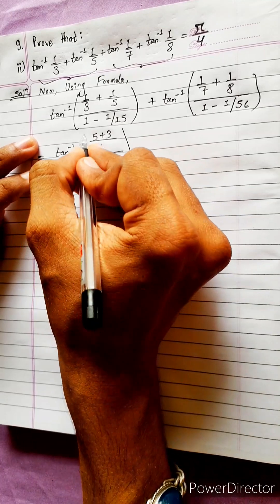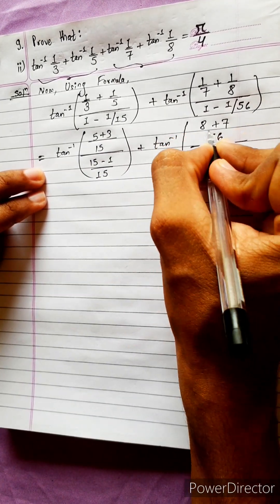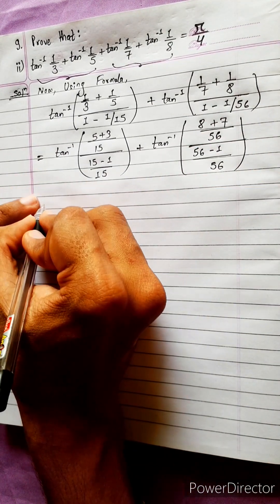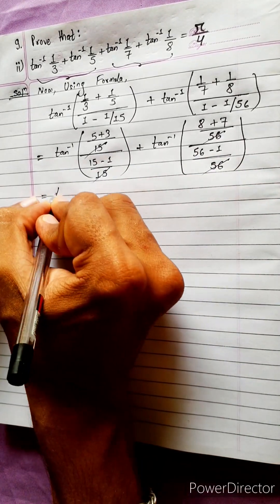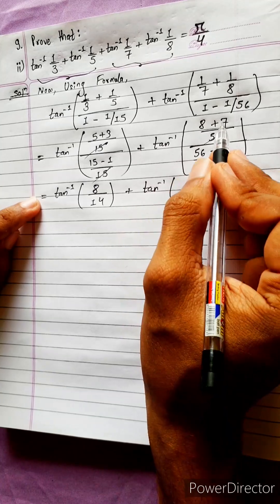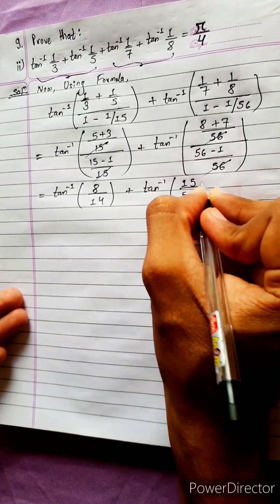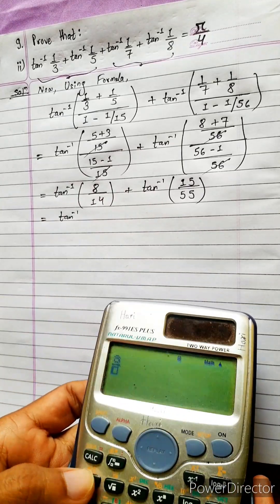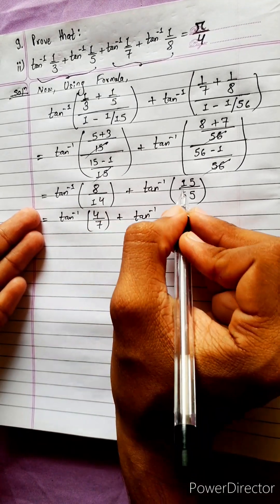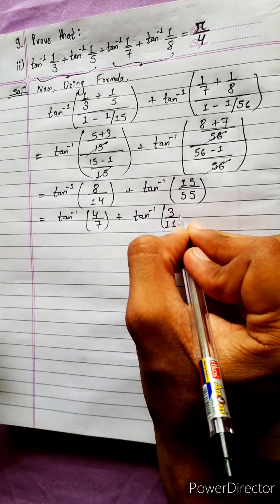Using the formula where 1 minus AB: tan inverse results in values. We get 8 by 14 — that is 4 by 7 — plus tan inverse of 8 plus 7, which is 15, over 56. Simplifying: 4 by 7 plus tan inverse 3 by 11, giving 15 over 55, which is 3 by 11.